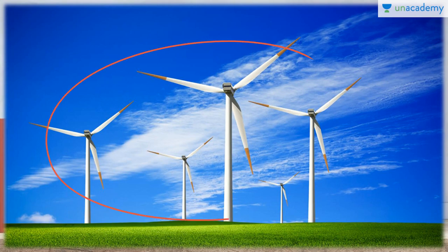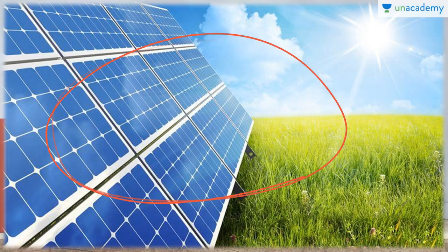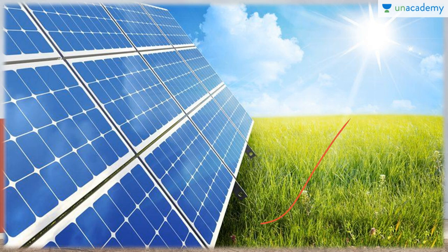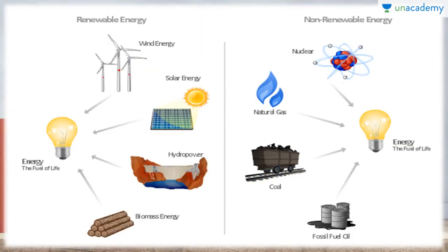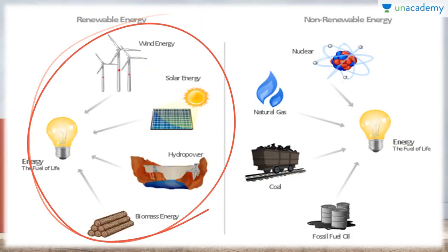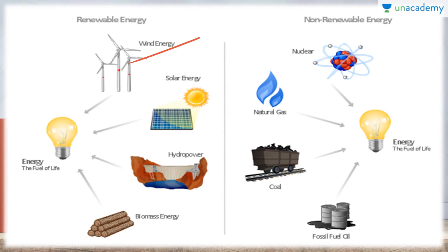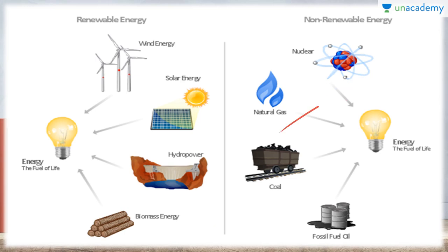You can see here an image depicting a windmill, which represents wind energy. This image depicts solar panels, which represent solar energy. You can see the renewable energy resources here: wind energy, solar energy, hydro power, and biomass energy — as well as the non-renewable: nuclear, natural gas, coal, and fossil fuel oil.